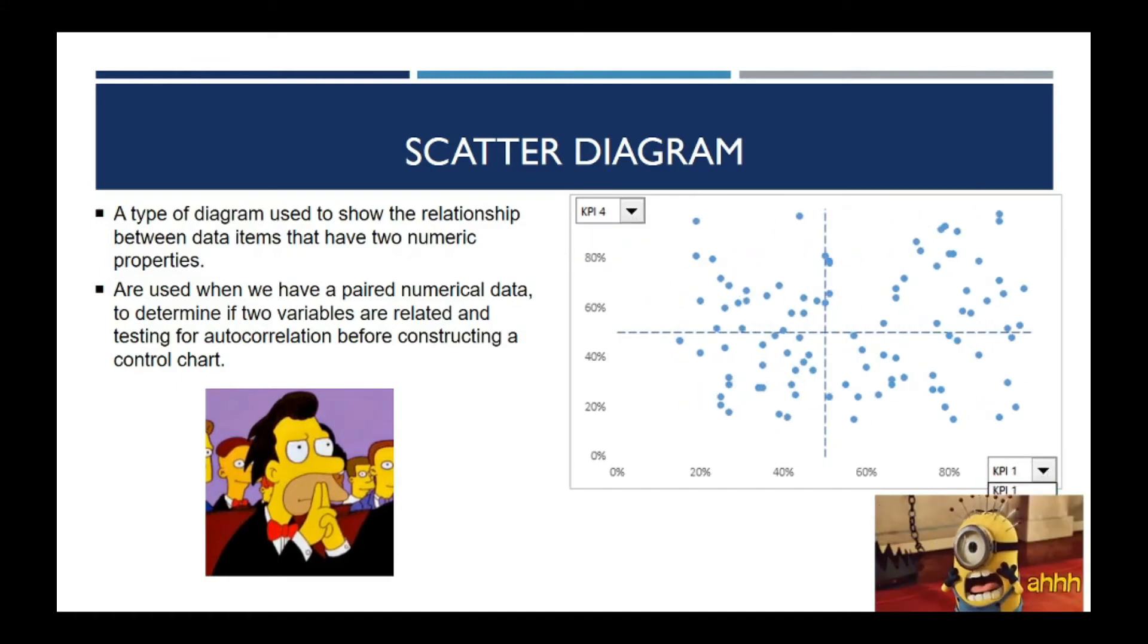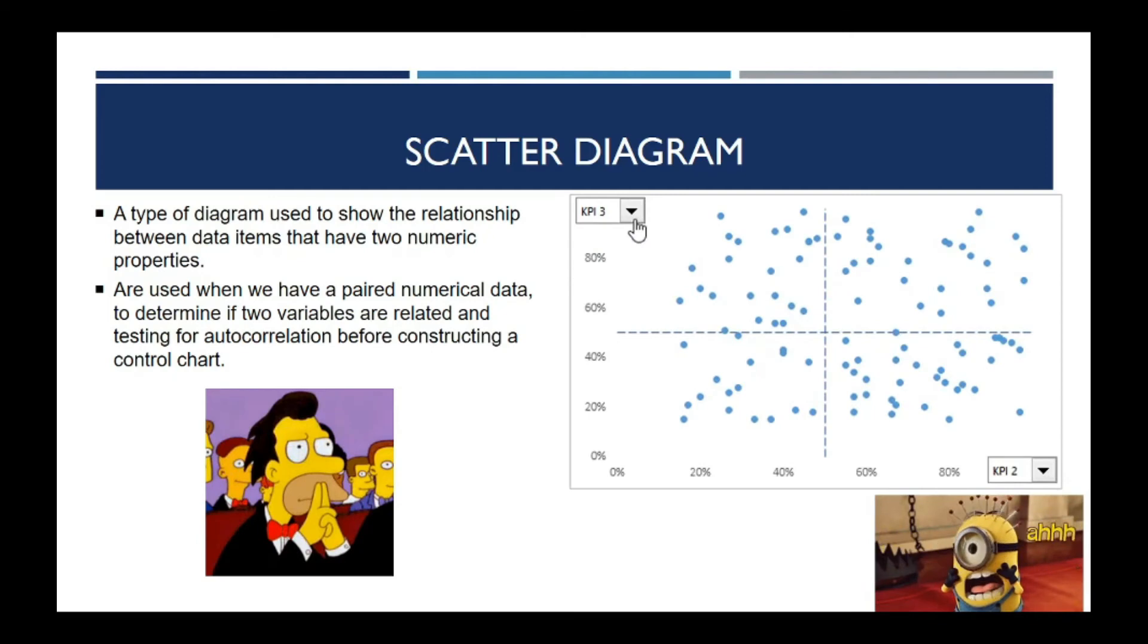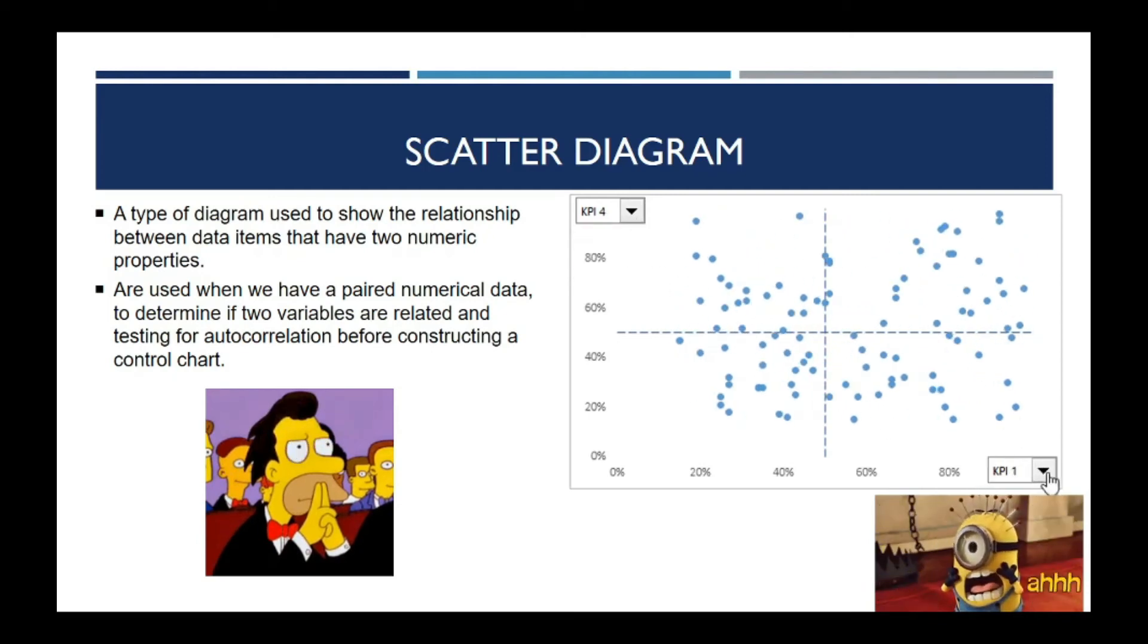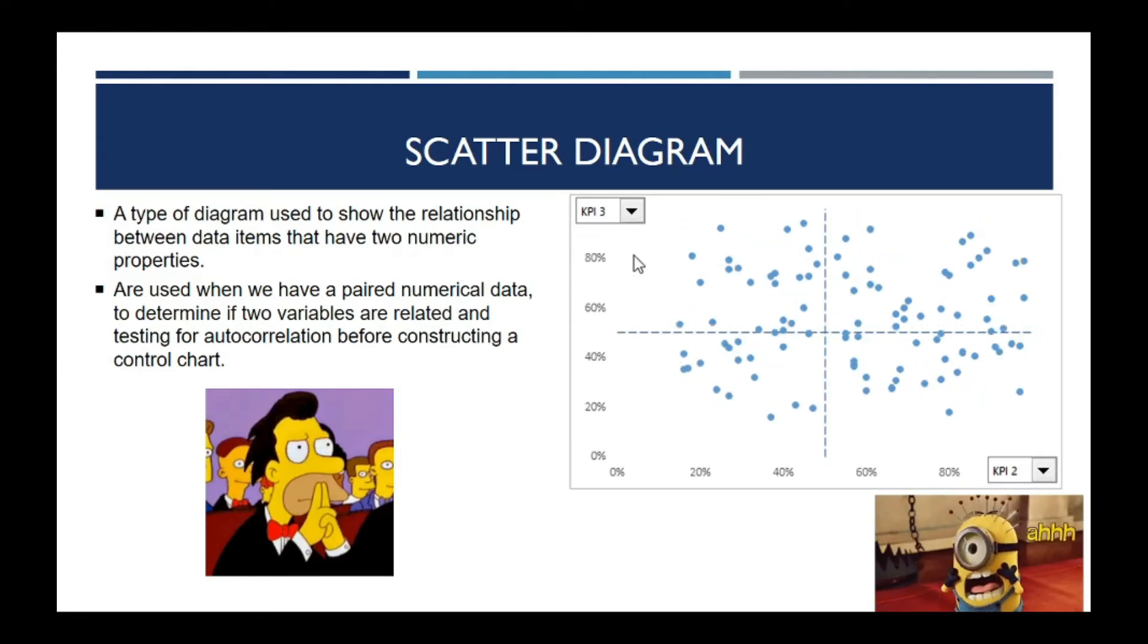Scatter Diagrams are used when we have paired numerical data, to determine if two variables are related, and for testing for autocorrelation before constructing a control chart.